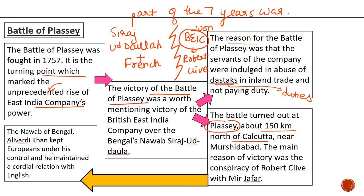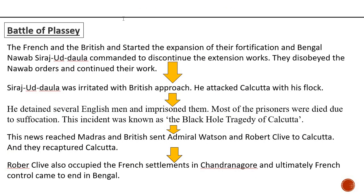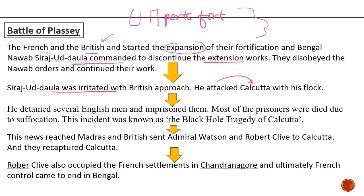The Nawab of Bengal, Alivardi Khan, kept Europeans under his control and maintained a cordial relationship with the Britishers. But then the French East India Company and the Britishers started expanding their fortifications, and Bengal's Nawab Sirajuddaula commanded them to discontinue the extension works. They disobeyed the Nawab's orders and continued building forts and ports near the coastal regions of Bengal. Nawab Sirajuddaula said to stop this fortification, but the Britishers did not accept his command. Sirajuddaula was irritated, so he attacked Calcutta, arrested several Britishers, and put them behind bars. Most of the prisoners died because of suffocation in the jails — this incident was known as the Black Hole Tragedy of Calcutta.